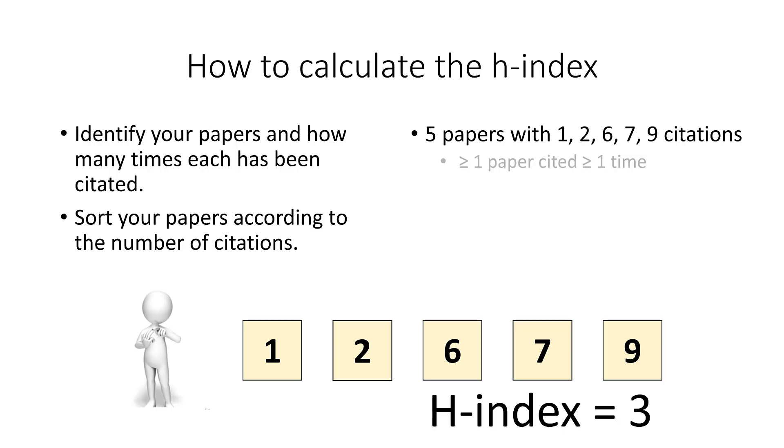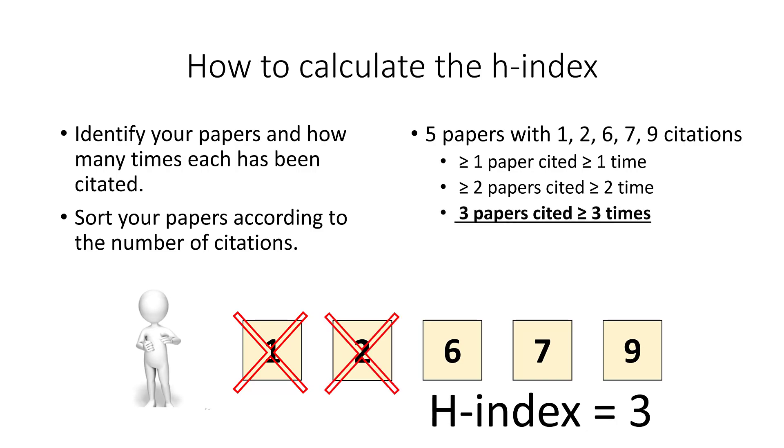We have at least one paper cited at least one time, at least two papers cited at least two times, and we have three papers cited at least three times, but we don't have four papers cited at least four times, so the H-Index is three.